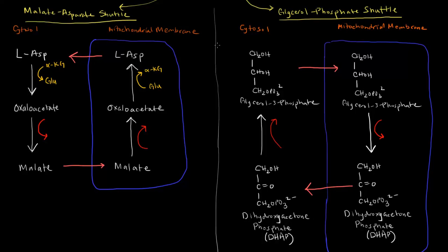These two shuttle mechanisms are the malate-aspartate shuttle and the glycerol phosphate shuttle. In the malate-aspartate shuttle, essentially what's going on is that if we have aspartate in the cytosol, L-aspartate, we can change that into oxaloacetate. This is an amino acid. We can change that into oxaloacetate via a transamination reaction, taking alpha-ketoglutarate and turning it into glutamate, ripping the amino group off of L-aspartate and attaching it to the alpha-ketoglutarate to make glutamate, and then resulting in oxaloacetate.